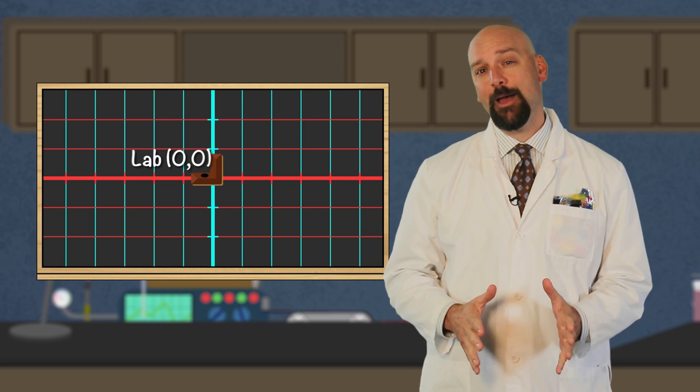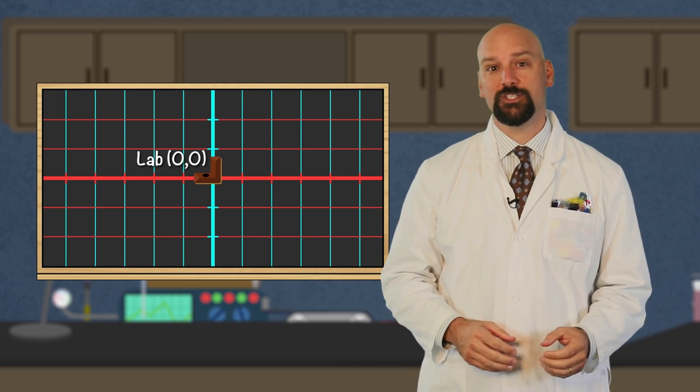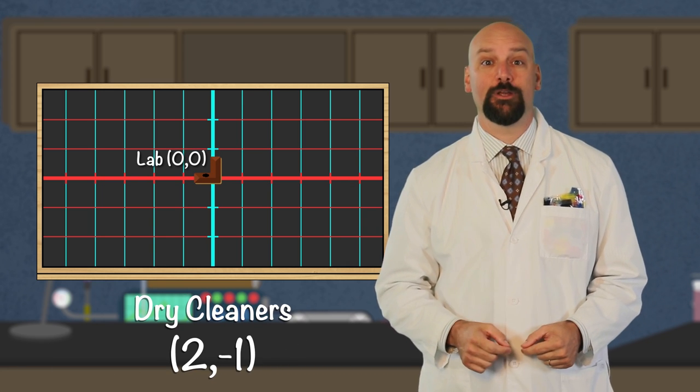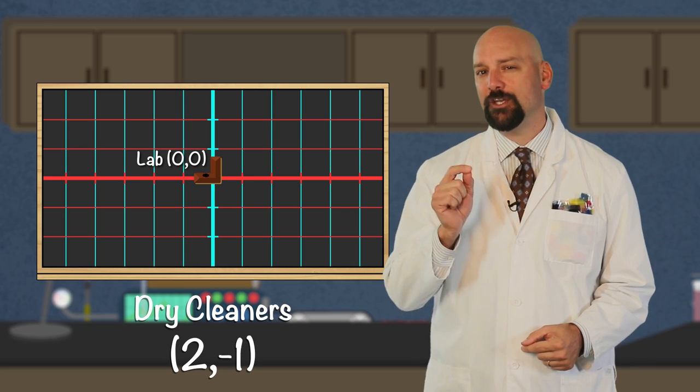Oh, I almost forgot, I need to get my dry cleaning today. Oh, I guess I'm supposed to get that too. Thanks for volunteering. Okay, where is it? Well, if the lab is zero-zero coordinates, then the dry cleaner is at two, negative one. Oh, coordinates! I know those.